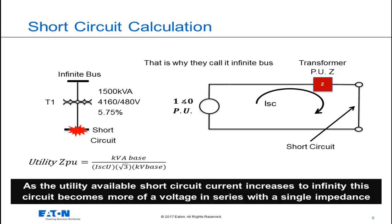It's an infinite amount of current available from the utility. But from a mathematical and an engineering perspective, the impedance of the utility is going away, and it becomes a short circuit.